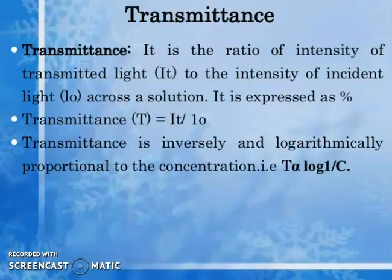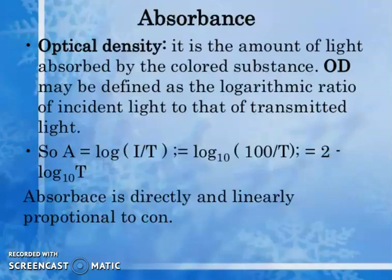Transmittance is the ratio of the intensity of transmitted light to the intensity of incident light across the solution, expressed as percentage transmittance. Transmittance is inversely proportional to concentration. Absorbance (OD) is the amount of light absorbed by a colored substance, defined as the logarithm of the ratio of incident light to transmitted light: A = log(1/T) = log(I₀/I) = 2 - log(%T). Absorbance is directly proportional to concentration.